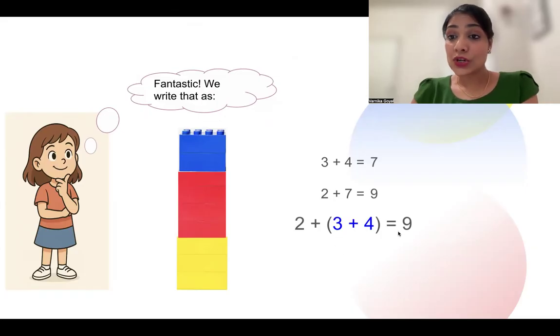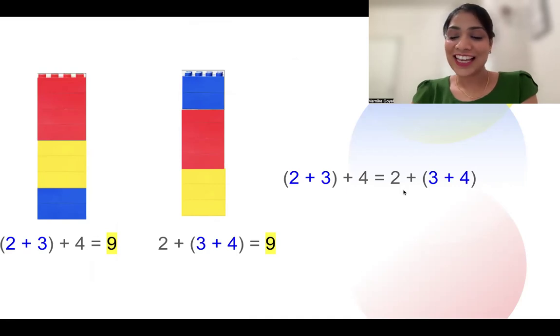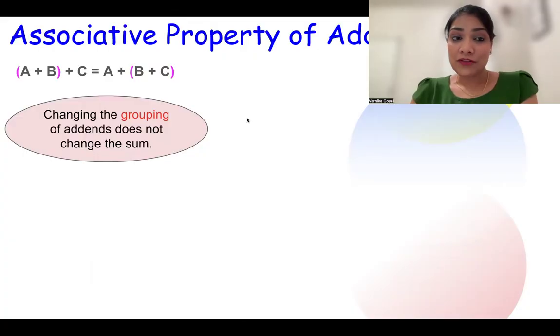So look, in the first tower when we grouped 2 and 3 together and then added 4, the sum was 9. While in the second tower when we added 3 and 4 and then added 2, the sum was still 9. So what do we see? That changing the groups of addends does not change the sum. That's actually our associative property.